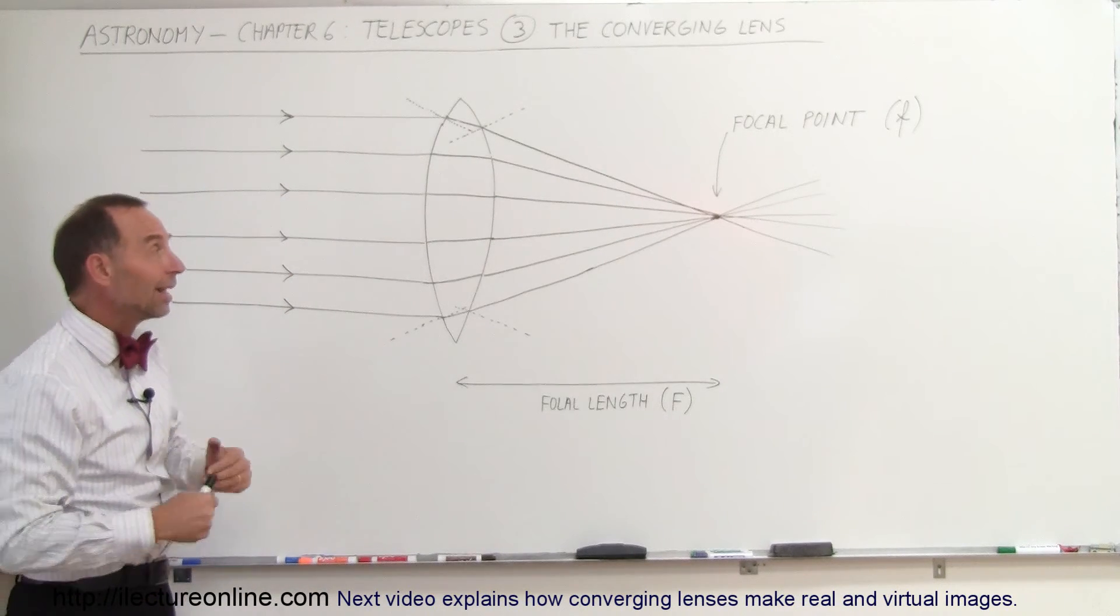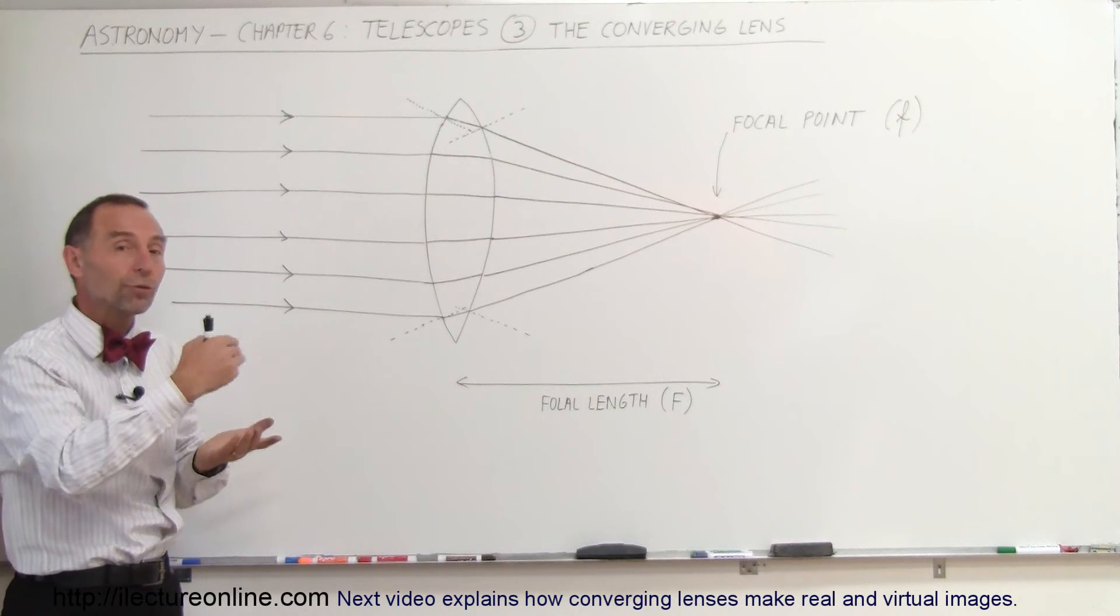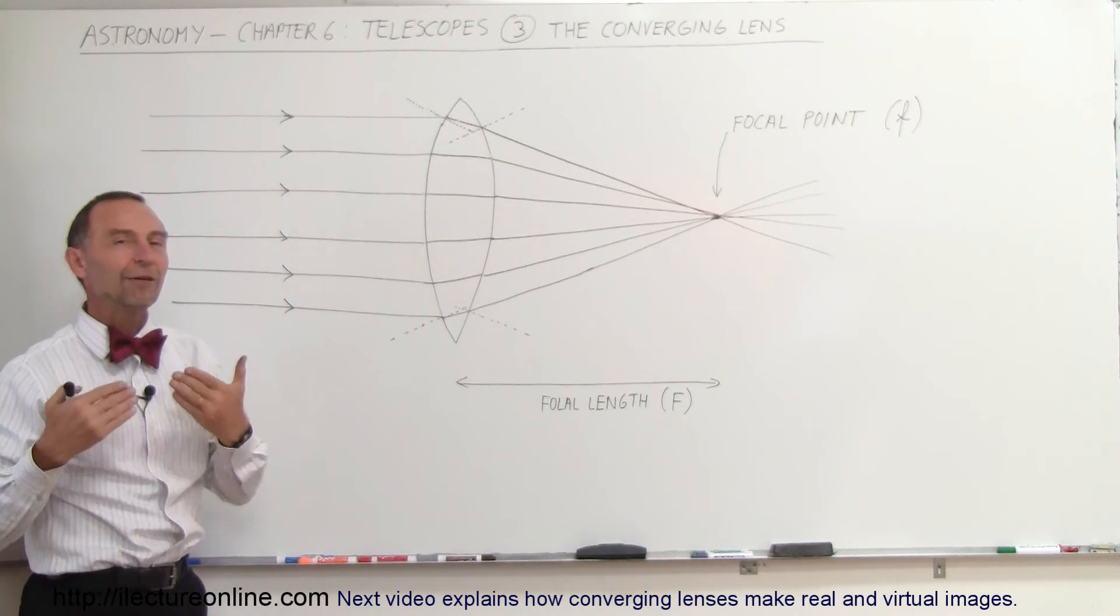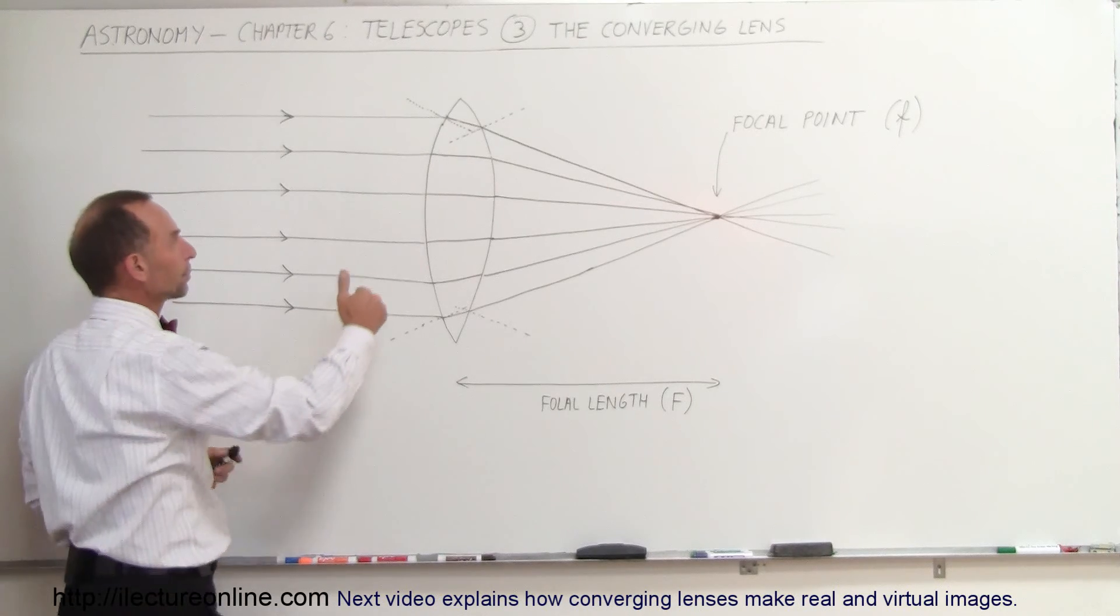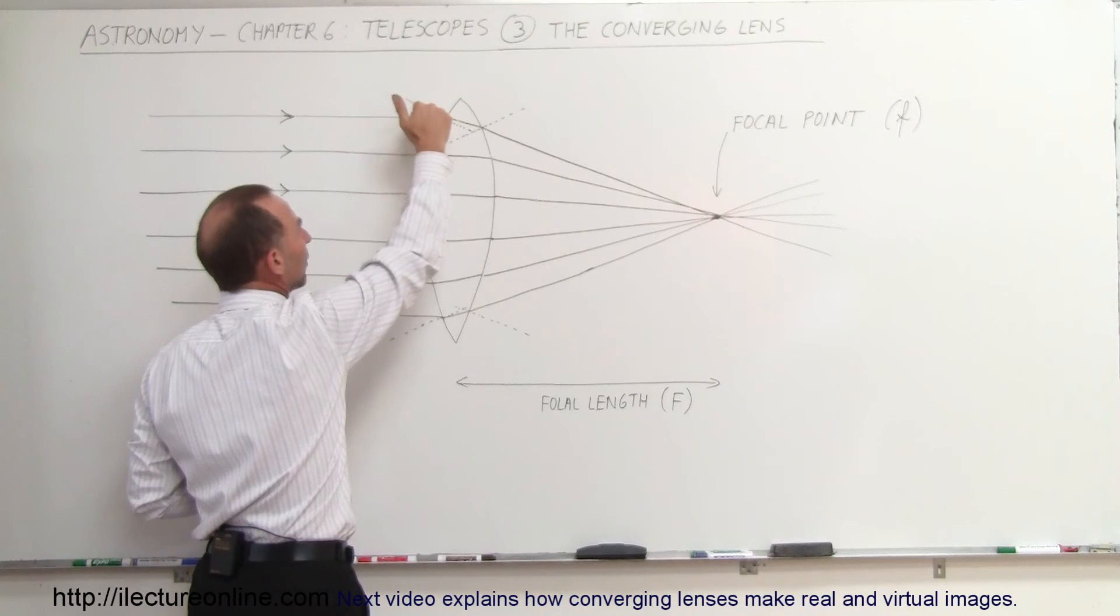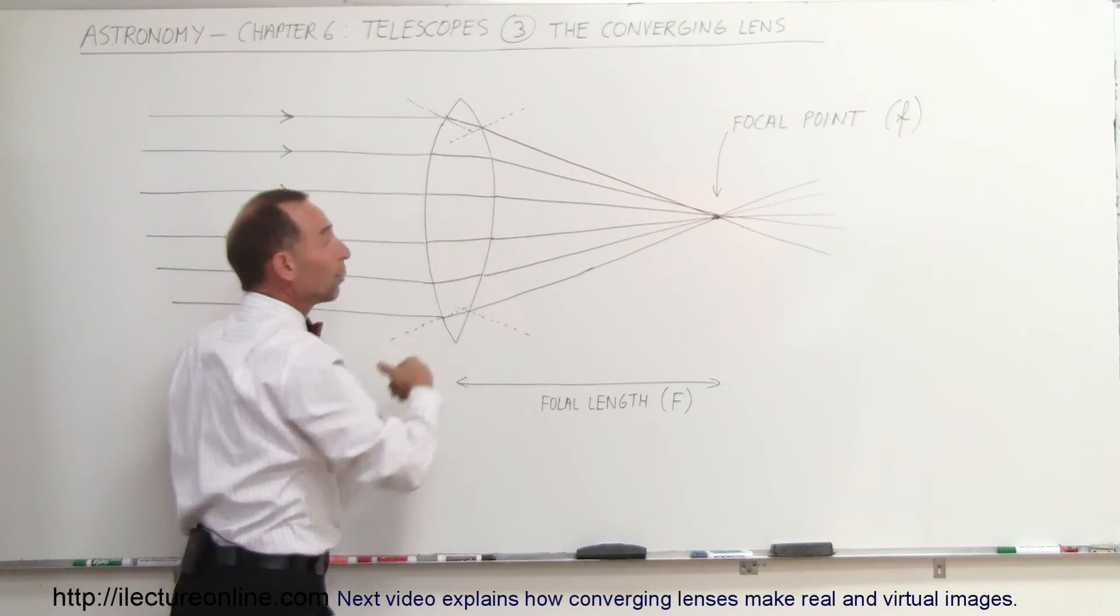Now it's converging lenses that enable us to build telescopes, and I'll show in the future videos how that's actually done. But the principle here is really refraction. When the light gets to the surface, it will bend towards the normal when it goes into the glass, and away from the normal when it leaves the glass.